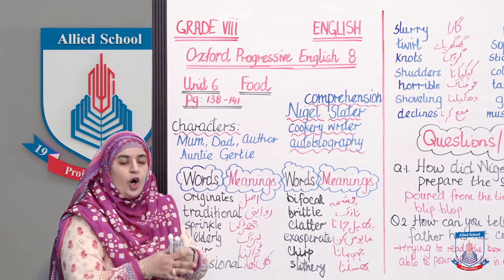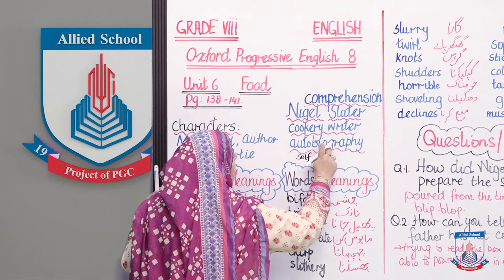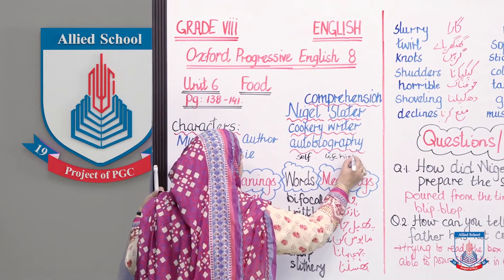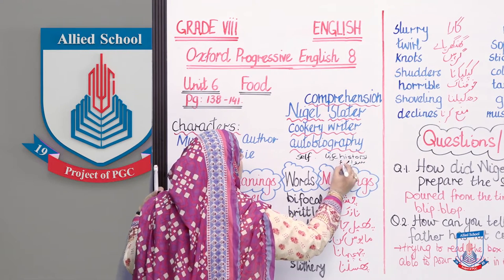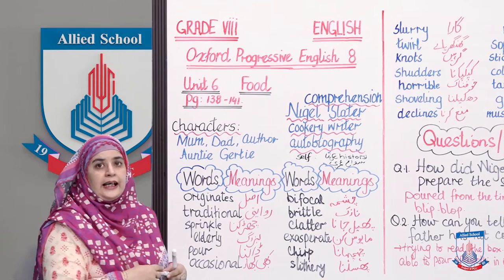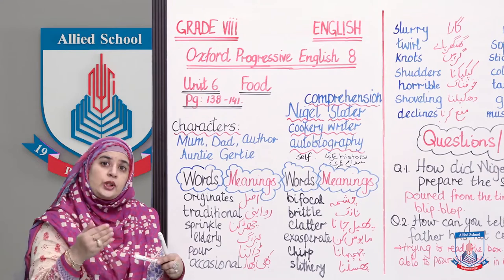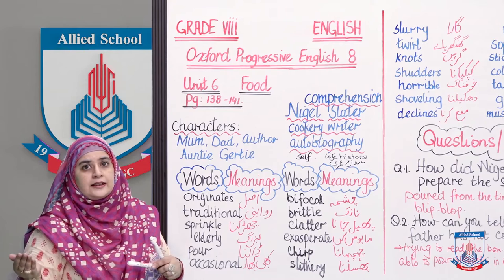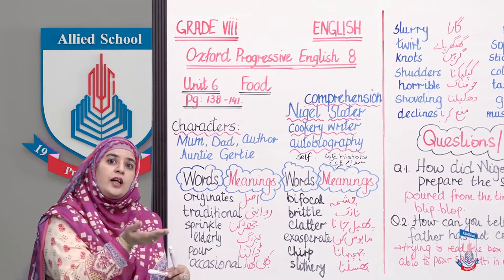Autobiography kya hoti hai? Auto ka matlab hota hai self. Auto means self. Biography means life, history. Urdu mein isko kehte hain sawane umre. Nigel Slater nae yeh book apni life ki history batane ke baare mein likhi hai. Usne apni, jahaan tak bachpan mein wo ja sakti hai, wahaan tak se lekar apni memories aapke saath share ki hain, ki now she is the world famous cookery writer.